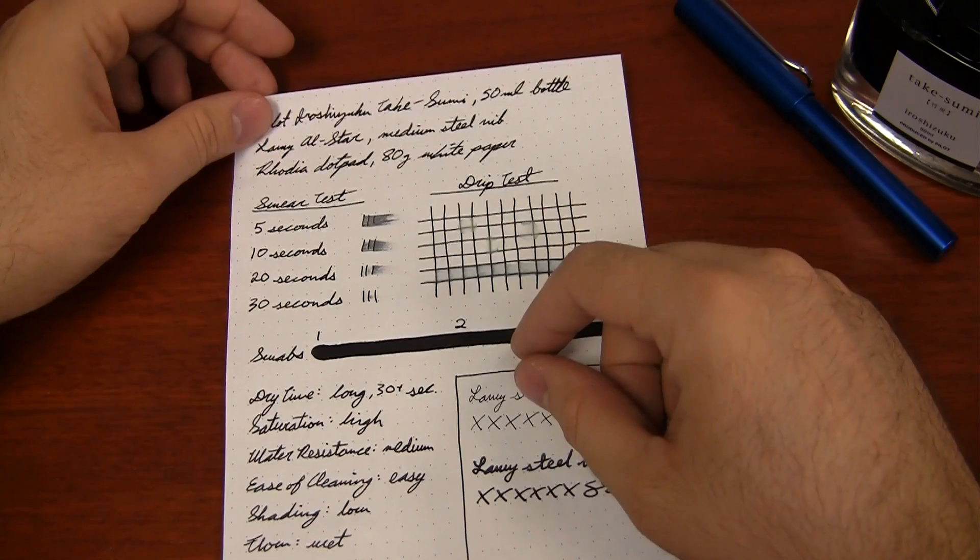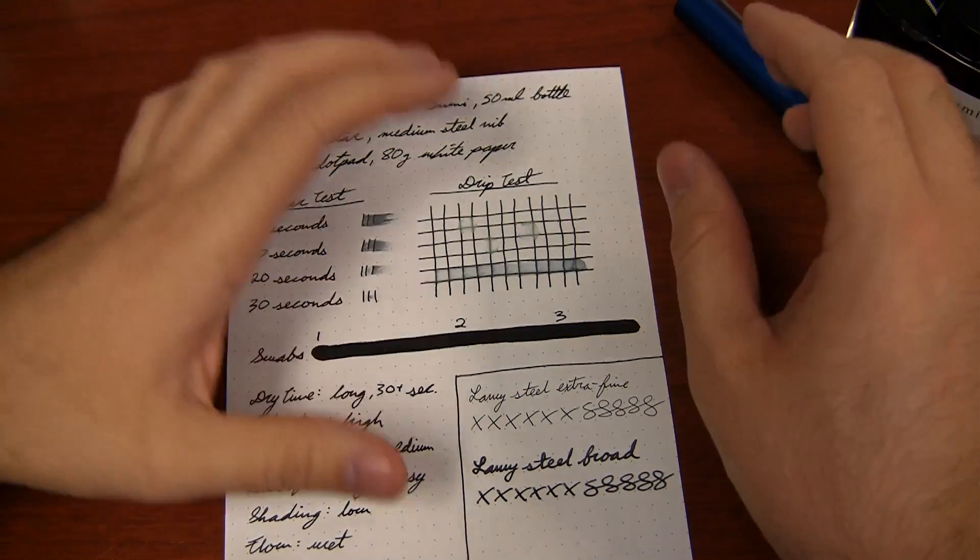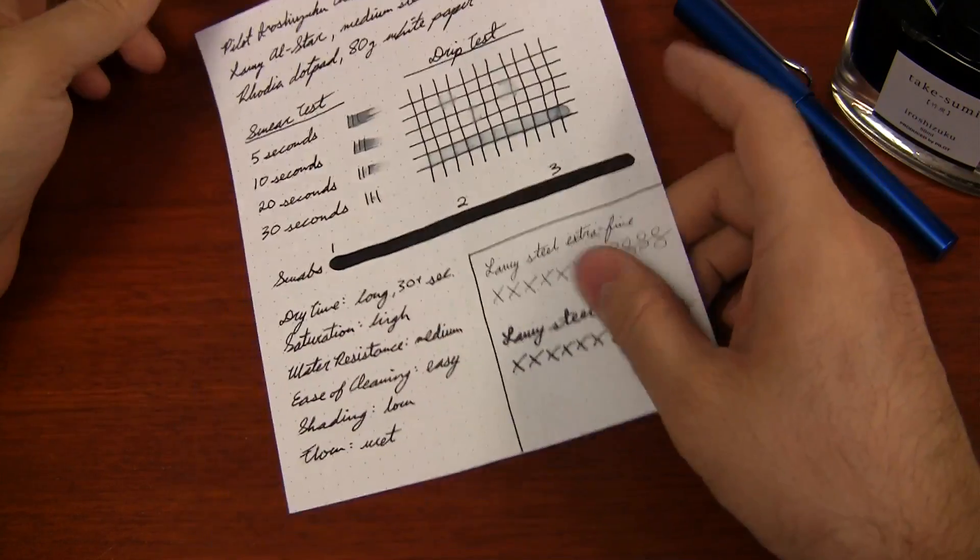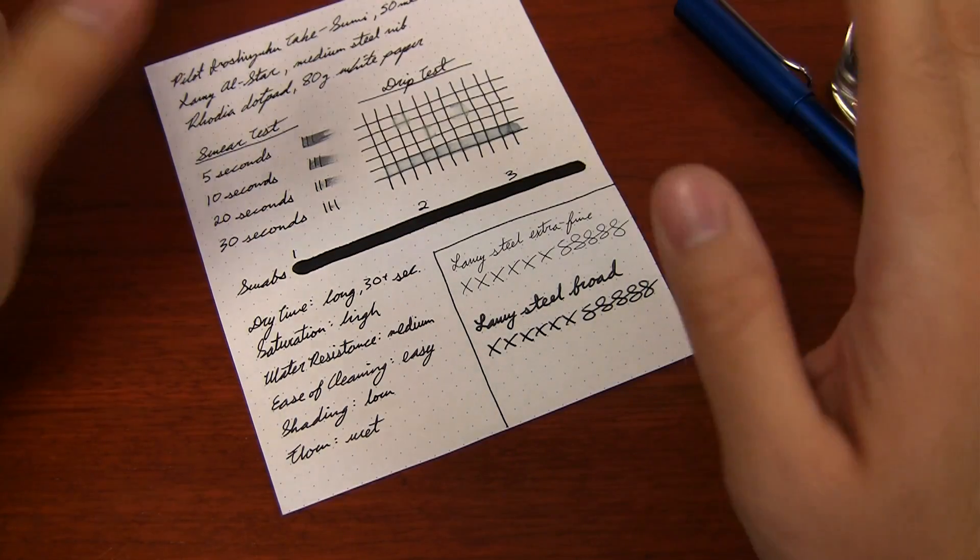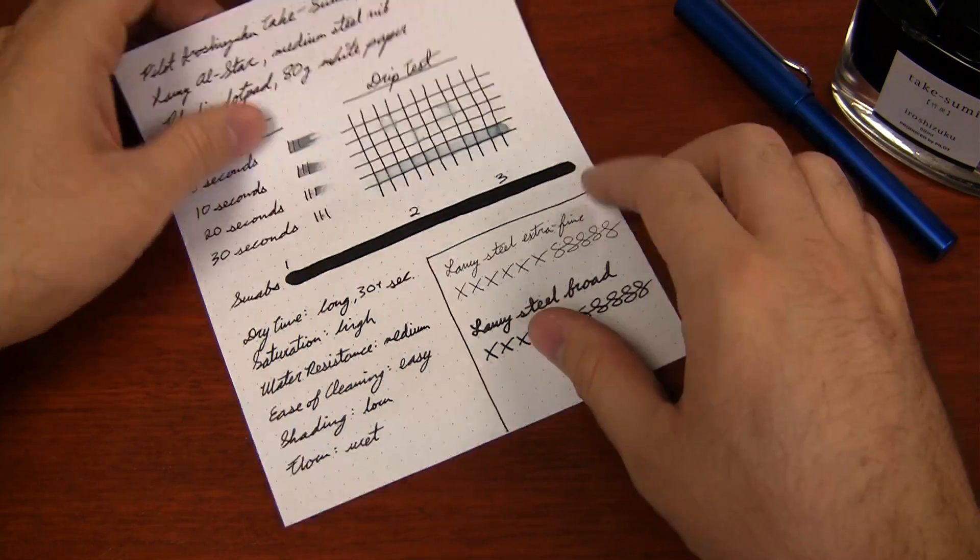Usually when you get black inks, they tend to lean yellow or they tend to lean red. That's pretty much what you get. And this one is fairly true black, but it leans just a little bit red, I would say.